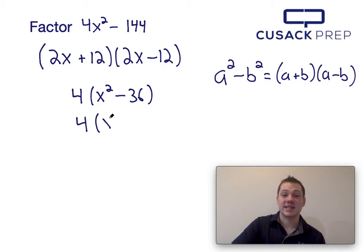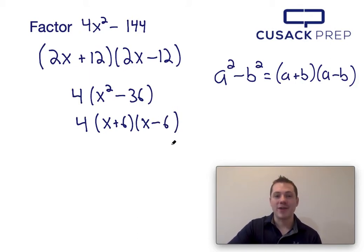x squared minus 36 can be factored using the difference of squares into x plus 6 times x minus 6. And there you have it, that's the fully factored form of 4x squared minus 144, solved using the difference of squares equation.